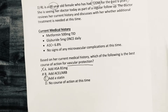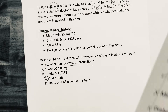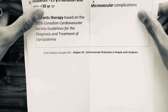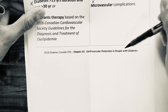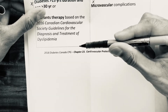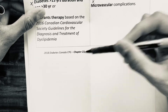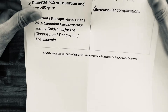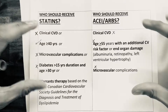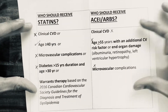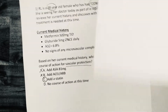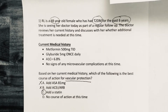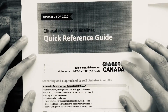For this question, the important reference is Chapter 23, Cardiovascular Protection in People with Diabetes, from the Diabetes Canada Clinical Practice Guidelines 2018. Please refer to that — it provides the same checklist layout of how to rule out options and determine what should be added.